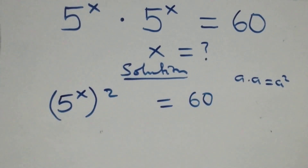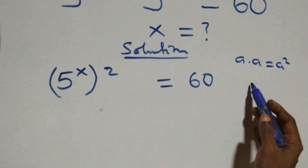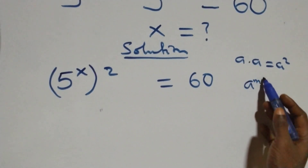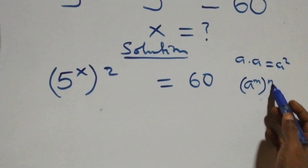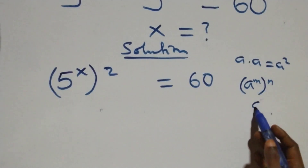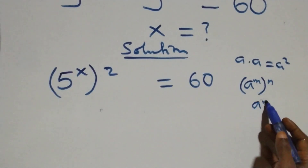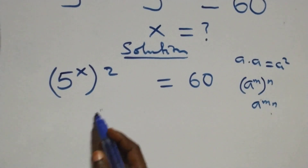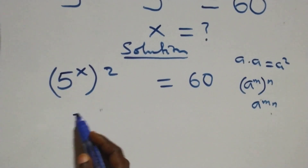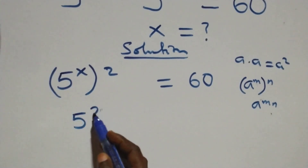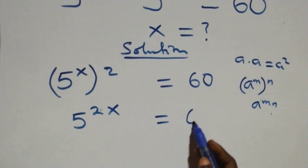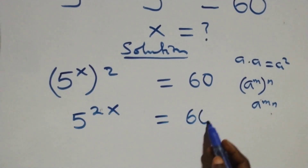The next step follows when we have a raised to power m, then raised to power m again, which is the same thing as a raised to power m times m — the powers multiply. So we have five raised to the power two x equals sixty.